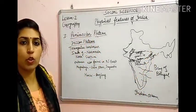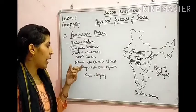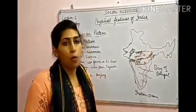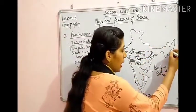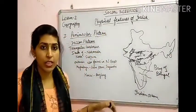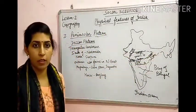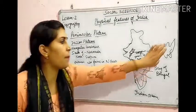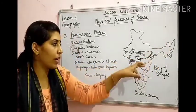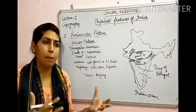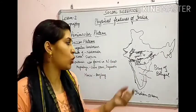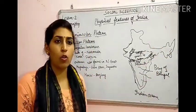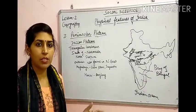Deccan Plateau के north-eastern part में भी कुछ mountains को Deccan Plateau का part माना जाता है — जैसे Meghalaya में। वहाँ जो rocks और fossils हैं वो दोनों में same हैं, इसीलिए Meghalaya की hills — Garo, Khasi, Jaintia — को Peninsular Plateau का part माना जाता है।